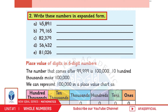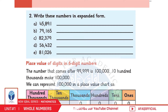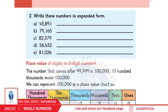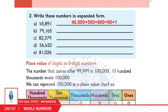Question 2: Write these numbers in expanded form. A: 45,891 = 40,000 + 5,000 + 800 + 90 + 1. बच्चो, इसी तरीके से अगले parts आपने खुद हल करने हैं।